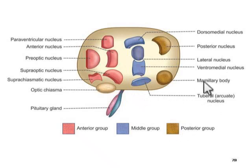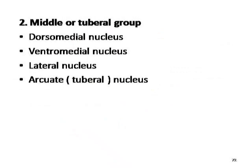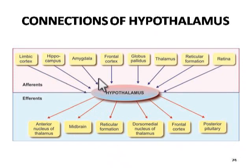The hypothalamus has both afferent as well as efferent connections. For the afferent connections, fibers from the limbic system may reach the hypothalamus — specifically fibers from the hippocampus, amygdaloid nucleus, frontal cortex, globus pallidus, thalamus, reticular formation, and retina.